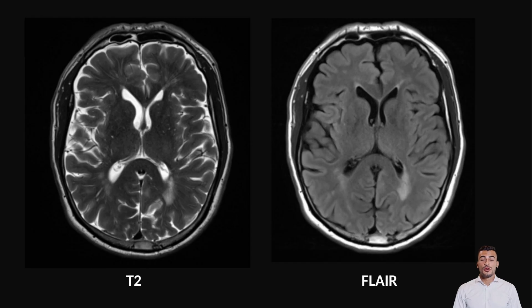Take a look at these two images. What do you see? Apart from some T2 FLAIR hyperintensities in the paraventricular region and deep white matter, do we see any signal changes? Maybe not.